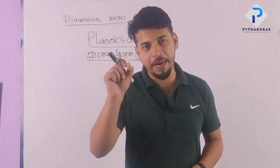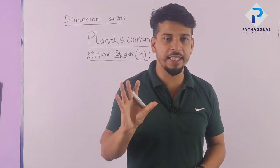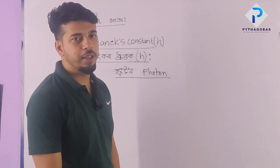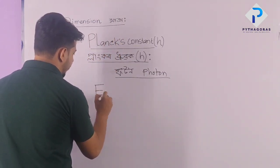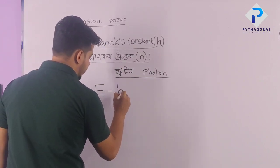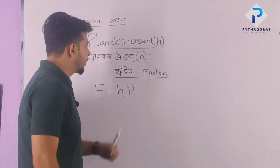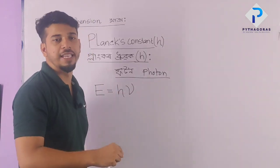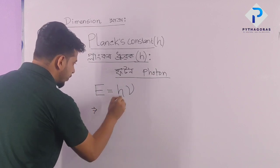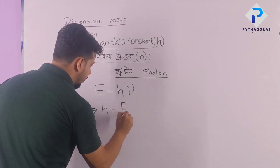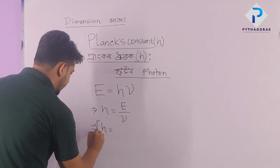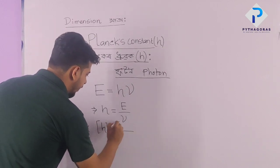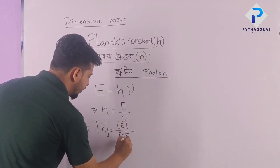So this is the dimension of the Universal Gravitational Constant: M to the power minus 1, L to the power 3, T to the power minus 2. Next: E is equal to h nu, where h is Planck's constant and nu is the frequency of light. Let's find the dimension of h.